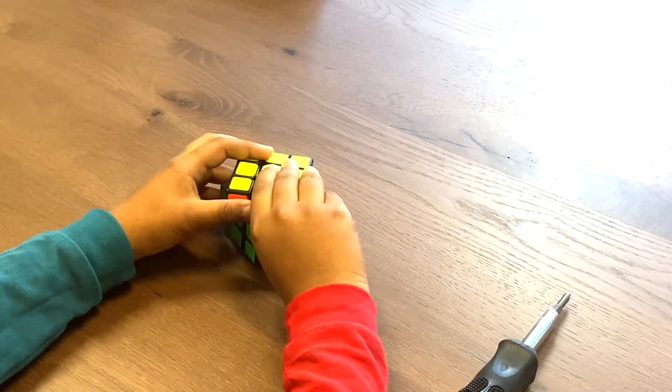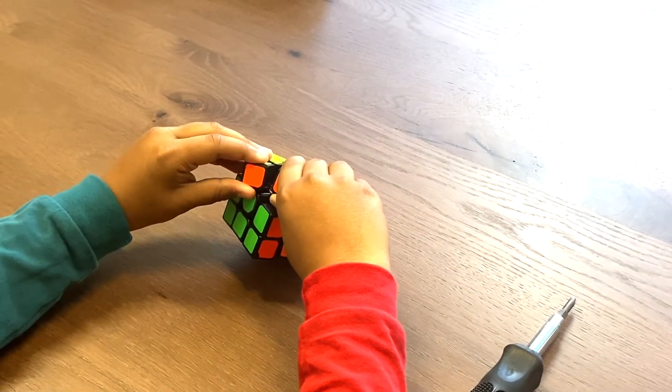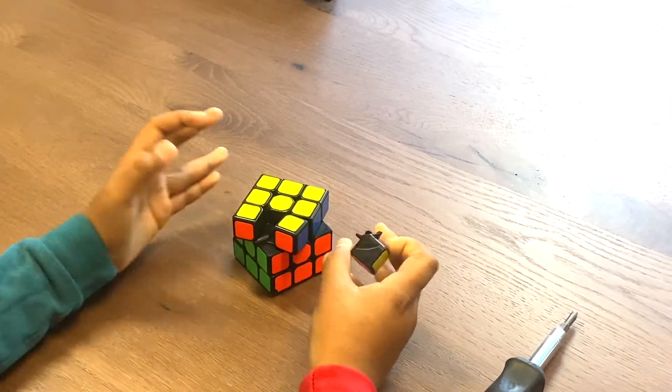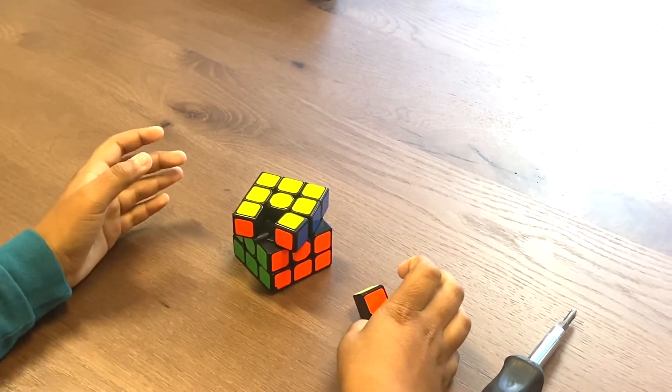And you want to use your thumb and wedge it underneath like that. And this is a modern Speed Cube, so what you want to do is pull the corner out of the way, do a little combination. It won't sometimes come as easy as that, but you have a piece like that.